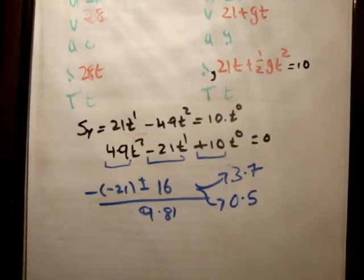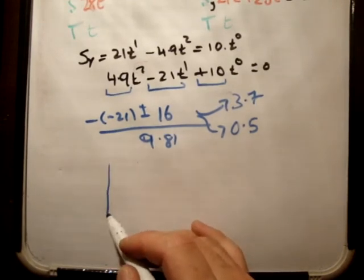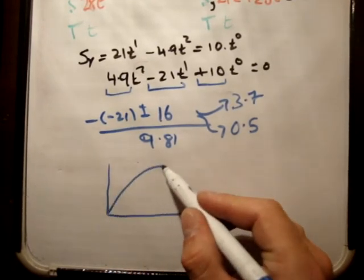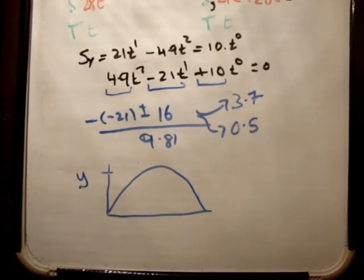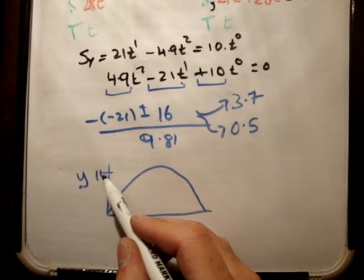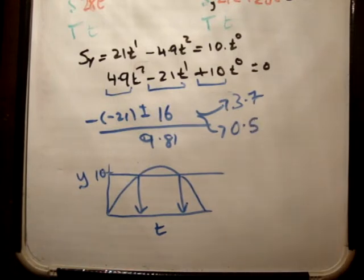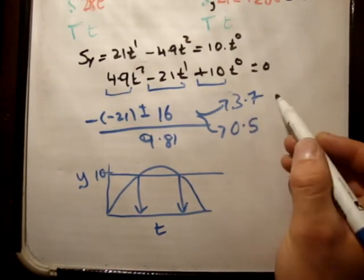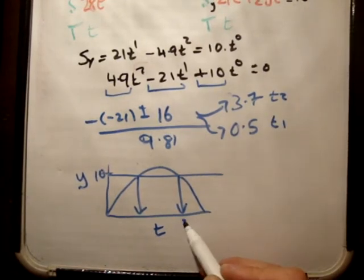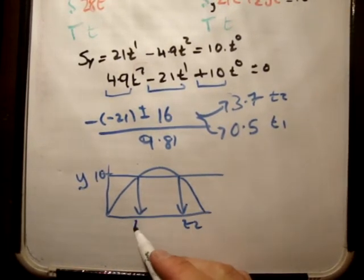So this is going to be 3.7 and then 21 minus 16 divided by 9.81, 0.5. Now we're asked to find the speed when it is 10 meters off the ground. This means that if this is our xy plane and the particle is going up like this, drawing height above ground versus time and this here is 10 meters, then the particle will be at 10 meters twice. One of them is 3.7 seconds and one is 0.5.